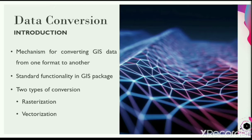Data conversion is a standard functionality in most GIS packages. Basically, you can find two types of data conversion that occur in a GIS: one is rasterization and the other is vectorization. In today's class we will learn about rasterization and vectorization.